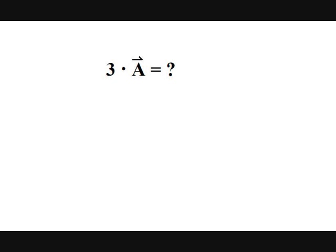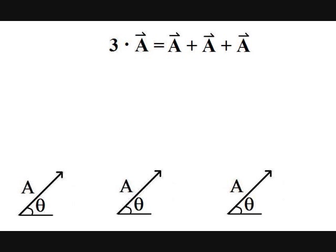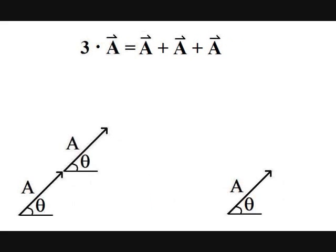Multiplication of a vector by a scalar is basically the addition of the same vector several times. Say I multiply a vector A by 3. That means I add A to itself 3 times. Using the convention I established for addition, I lay the tail of vector A onto the head of another vector A 3 times.